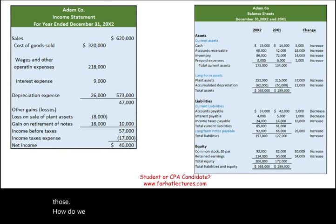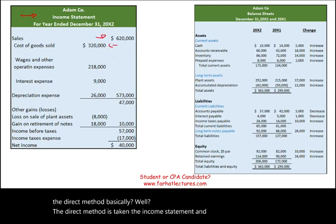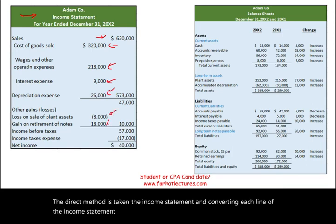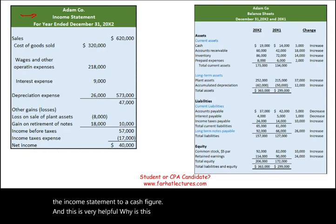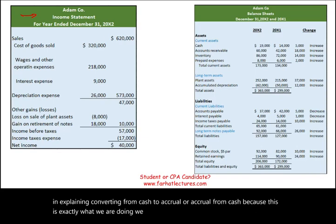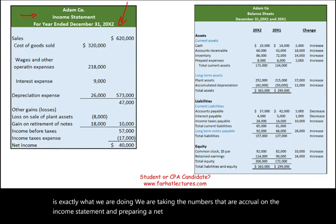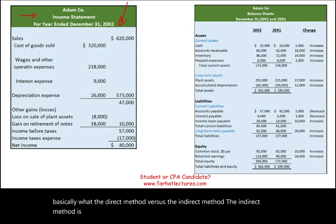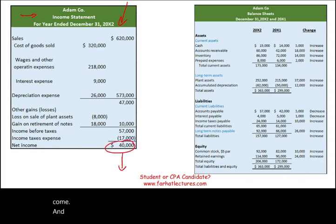In this session, we will prepare the operating section using the direct method. There are two methods: indirect or direct. The direct method takes the income statement and converts each line to a cash figure. The indirect method is a reconciliation — we start with net income and work backward to get to cash net income. Both give you the same answer, just two different methods.